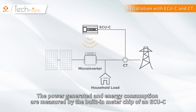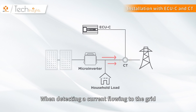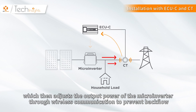The power generated and energy consumption are measured by the built-in meter chip of an ECU-C. When detecting a current flowing to the grid, the CT transmits the data to the ECU-C, which then adjusts the output power of the microinverter through wireless communication to prevent backflow.